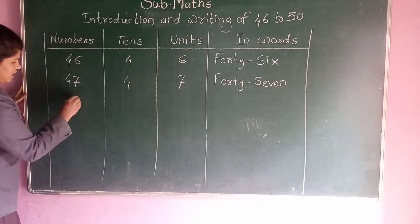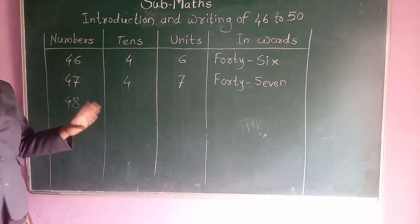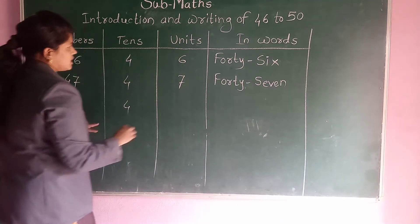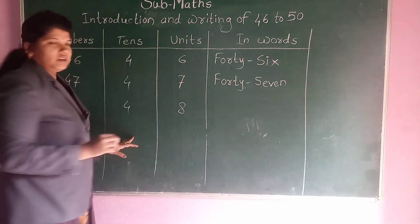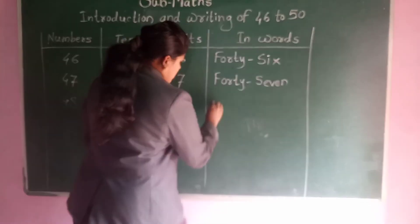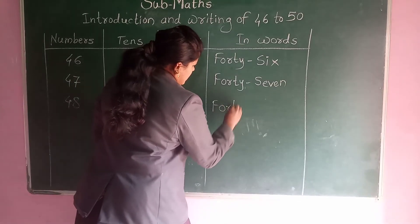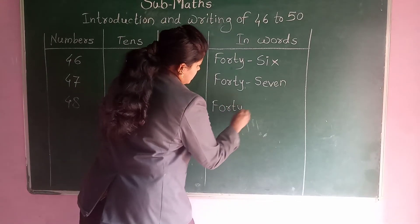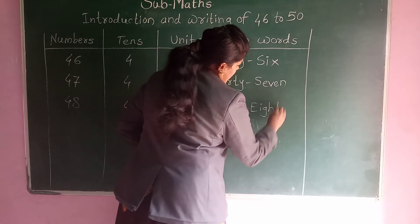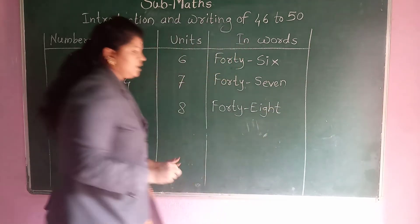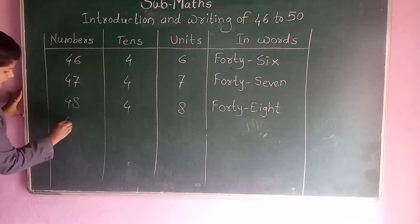After 47, which number? 48. This number's tens and units — 4 is the tens and 8 is the unit. So 48, how to write: FORTY EIGHT — F, O, R, T, Y, E, I, G, H, T.